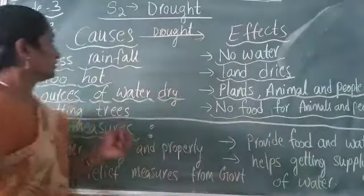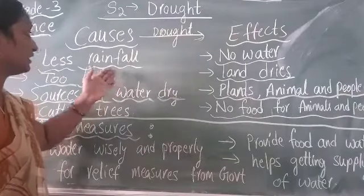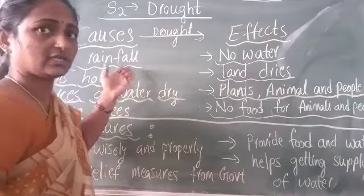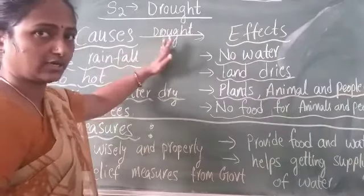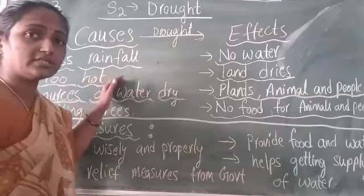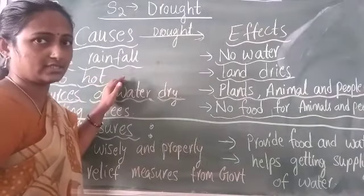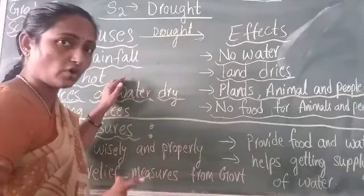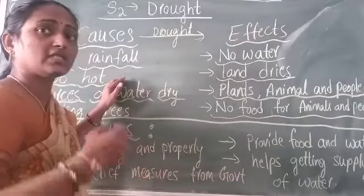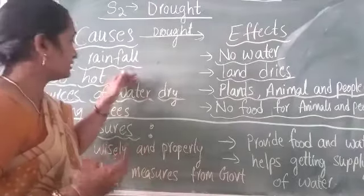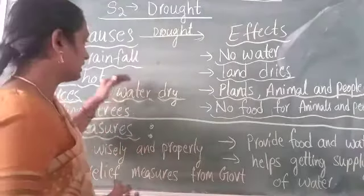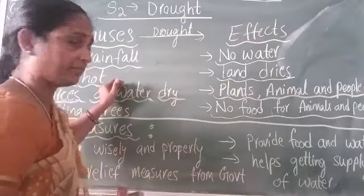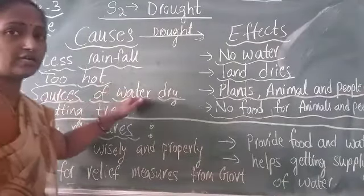What are the causes of drought conditions? When there is very less rainfall in the areas, it leads to drought. When temperatures are too hot in these regions, the water bodies get dried up and we cannot see any plants growing there.